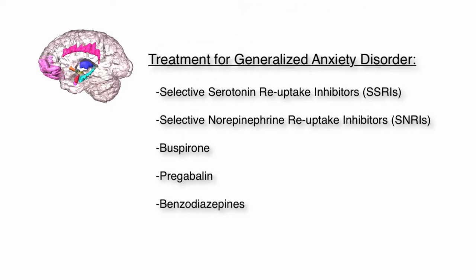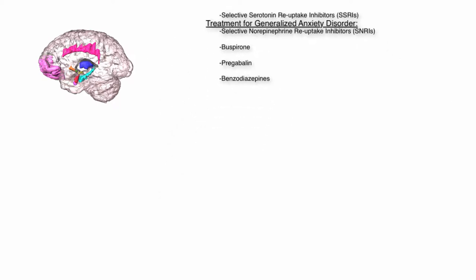We will now discuss the common treatments for generalized anxiety disorder. These treatments include selective serotonin reuptake inhibitors, or SSRIs, selective norepinephrine reuptake inhibitors, or SNRIs, buspirone, pregabalin, and benzodiazepines.